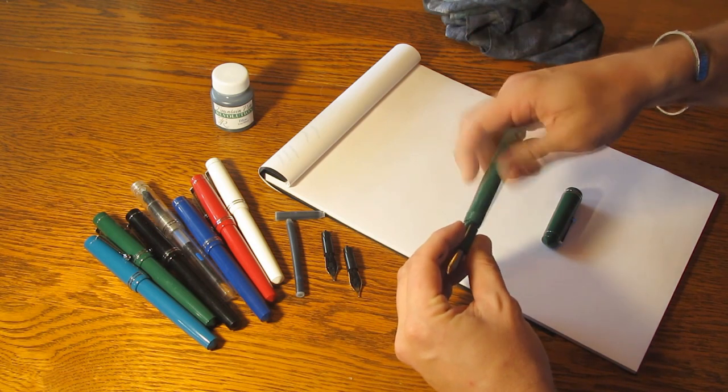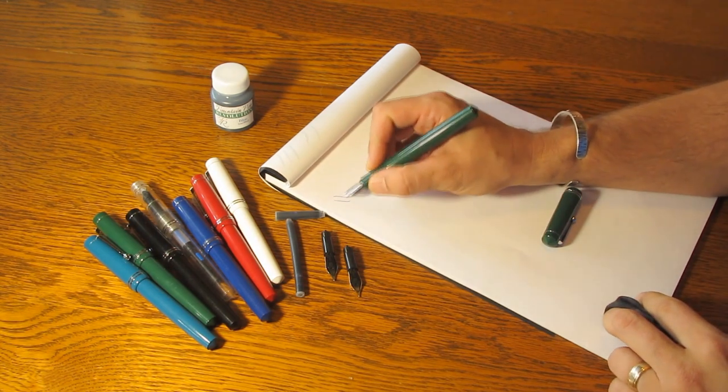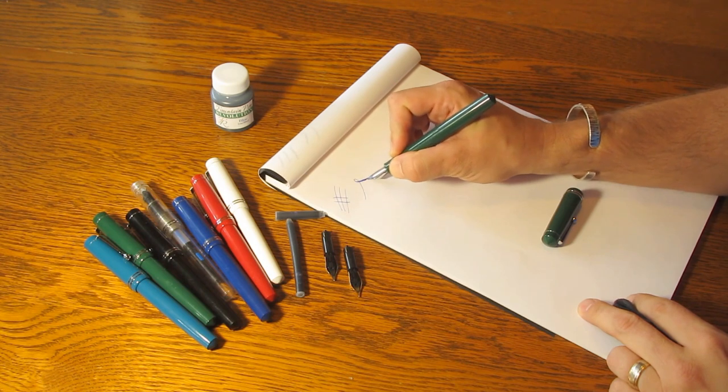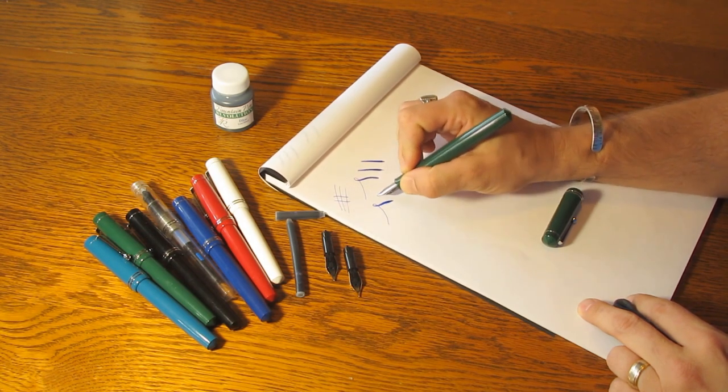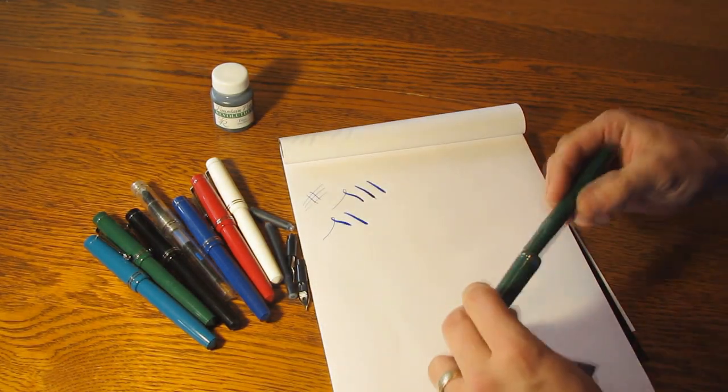This particular pen is fit with our flex nib. Our flex nibs on this pen will give about a 0.5 millimeter line on the thin end and then really flex out to about two millimeters with a little bit of pressure there. It's FPR blue that we have in this pen today.